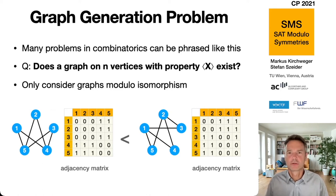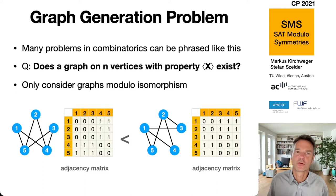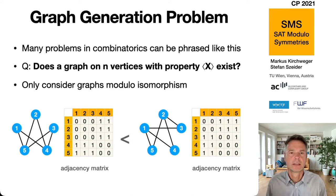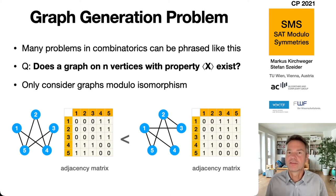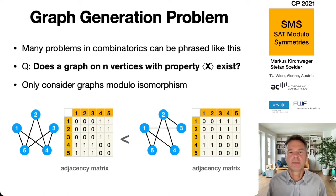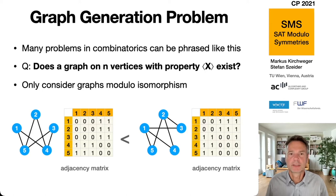Many problems in combinatorics can be phrased as whether there exists a graph on n vertices with a certain property x. The search space is enormous, therefore one focuses on graphs modulo isomorphism, and this can be accomplished by considering the adjacency matrix of the graph and only considering graphs where this adjacency matrix is minimal with respect to the lexicographic ordering.